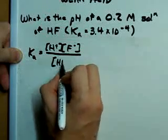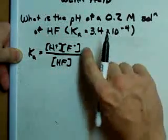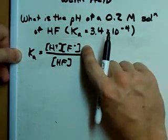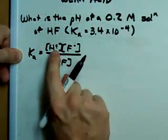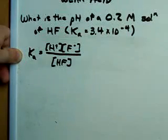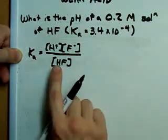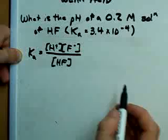Or in this case, the concentration of hydrofluoric acid that dissociated. The concentration of H plus times the concentration of F minus that was produced, and the concentration of undissociated acid on the bottom.